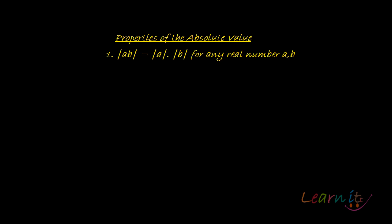We will discuss a few very important properties about the absolute value of a real number. Property number one: the absolute value of the product of two real numbers equals the product of their individual absolute values. So what we are talking about is |ab|, which should equal |a| times |b|.